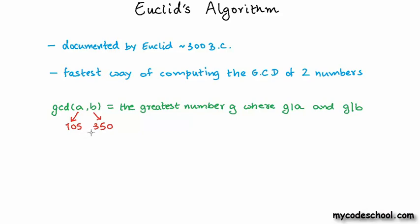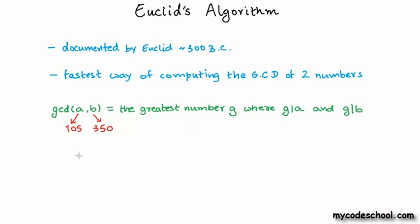Since GCD deals with the common divisors of both A and B, one efficient way of doing it would be to first compute all the factors of A — 105 — and after that we could see which of these factors also divide 350 perfectly. At this point we have the common divisors of both 105 and 350 and we can just choose the highest number from this set to find the GCD. To find out all the factors of 105, we simply need to divide 105 by all numbers up to its own square root.